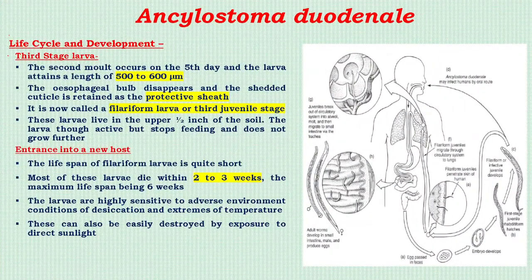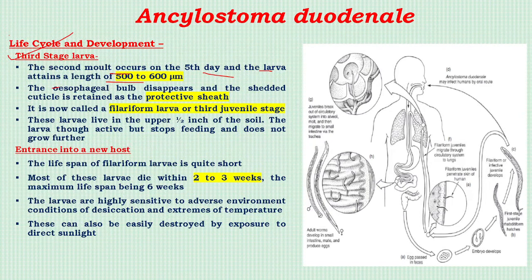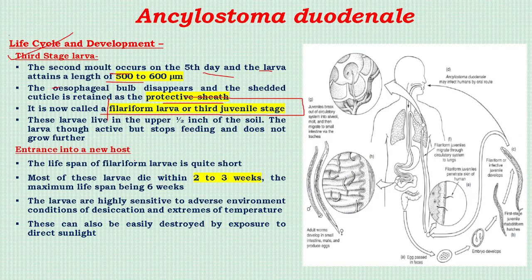The second molting occurs on the fifth day and the larva attains a length of 500 to 600 micrometers. The esophageal bulb disappears and the shed cuticle is retained as a protective sheath. This larva is now known as the filariform larva or third-stage larva — the infective stage for human beings.